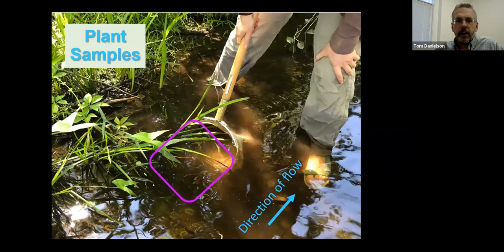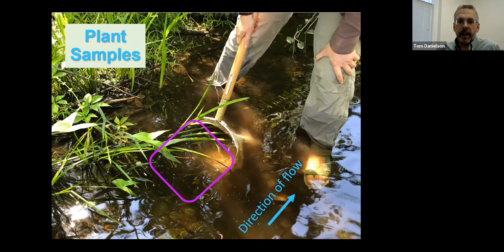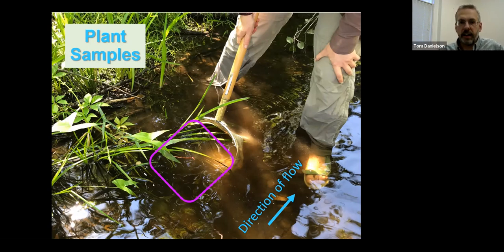For plant samples with emergent grasses, sedges, rushes, or pickerel weed, one person holds the net while the other gently wipes and rubs the plant surfaces to get stuff to float into the net. The person with the net may need to move to follow more closely where the other person is cleaning, to maximize the amount of critters captured.